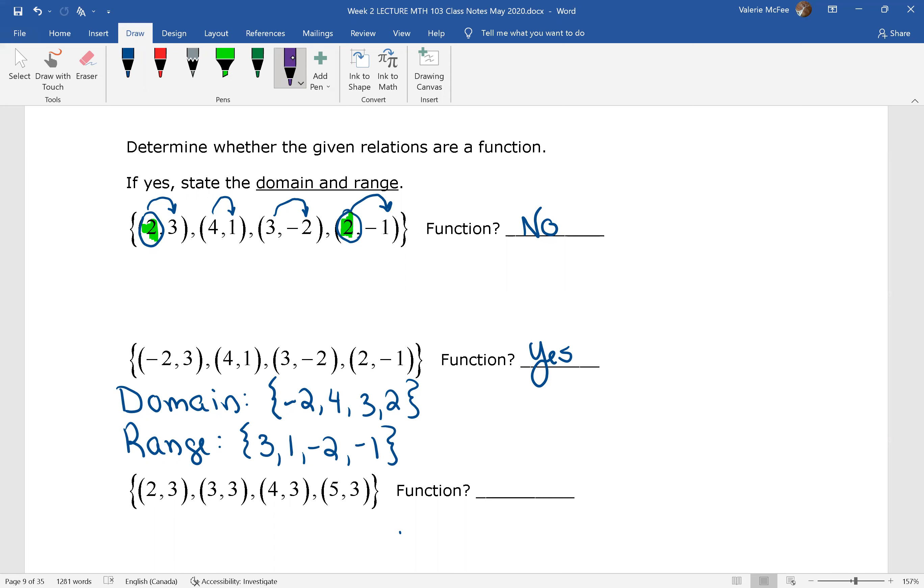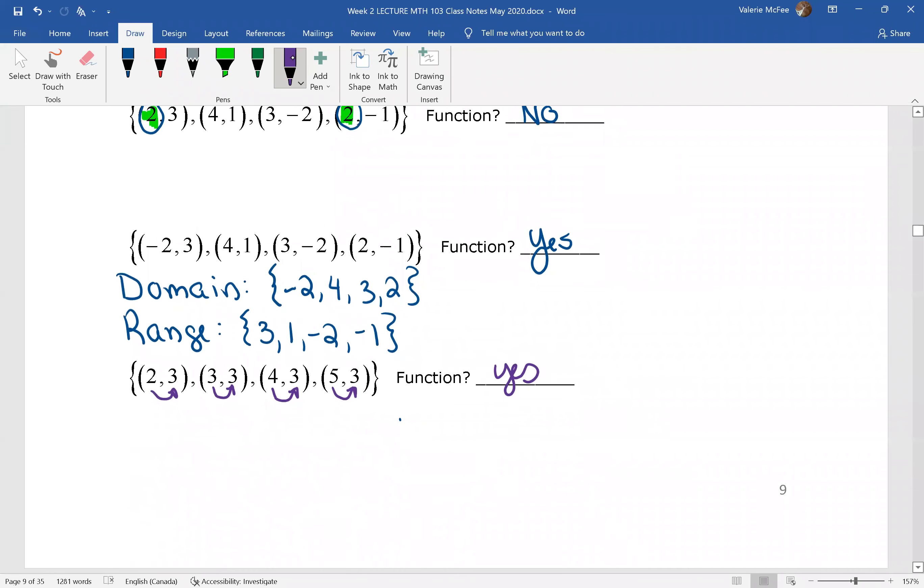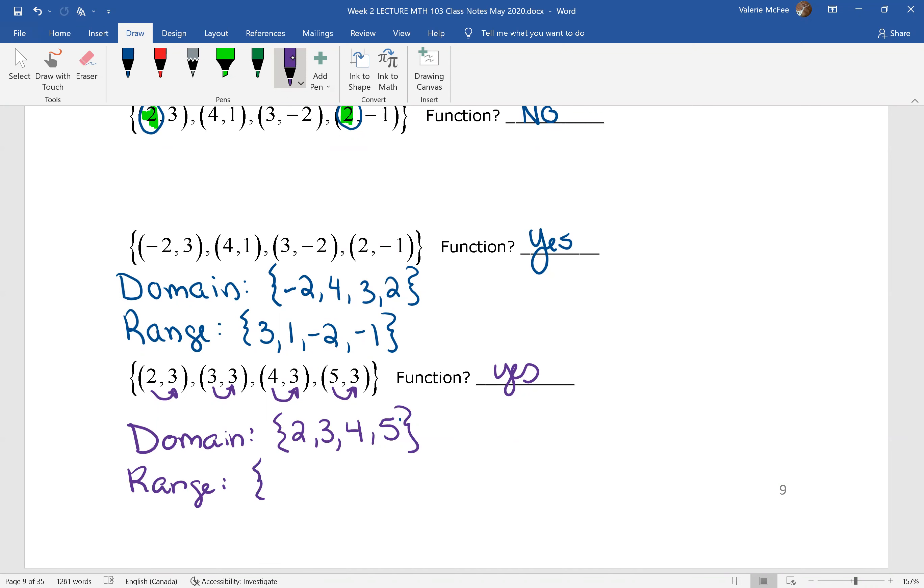Is the last relation a function? Yes, it is. 2 corresponds to 3 and nothing else. 3 corresponds to 3 and nothing else. 4 corresponds to 3 and nothing else. 5 corresponds to 3 and nothing else. This is a function. Pause your video and write down the domain and range. The domain was the set of X values. The range has only one, just three.